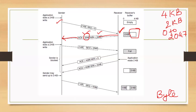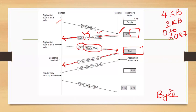When this acknowledgement is received by the sender, it now knows it can send only 2 KB of data, so it sends 2 KB with starting sequence number 2048. This is received at the receiver and the buffer becomes full. The acknowledgement sent by the receiver has acknowledgement number 4096 and the window size is updated to 0. When the sender receives this, the sender is blocked because the window size is 0 and cannot send any more data until there is an update.